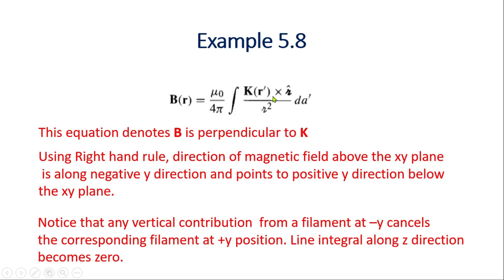B(r) = (μ₀/4π) ∫ (K × r̂)/r² da′ — یہ کسی بھی surface current density کی وجہ سے magnetic field find out کرنے کا فارمولا ہے۔ یہ فارمولا بتا رہا ہے کہ magnetic field کی direction surface current density کے perpendicular ہوگی، کیونکہ K × r̂ یہ cross product ہے۔ اس وجہ سے magnetic field اس surface current density کے perpendicular ہوگا۔